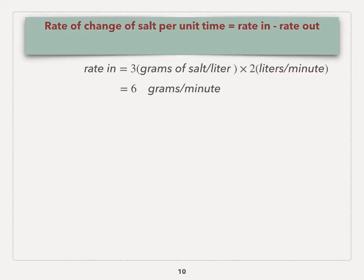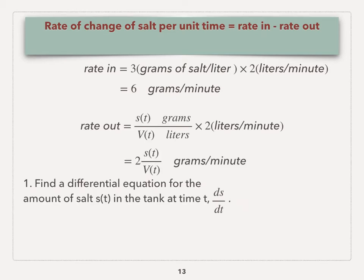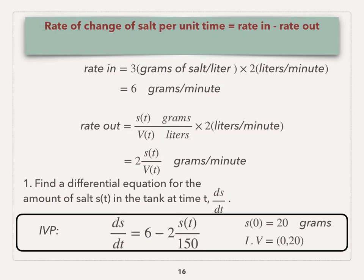Let's summarize all that we have learned. We have rate in, we have rate out, and we can finally find the differential equation for the amount of salt. ds/dt equals rate in minus rate out. And then we also have an initial value. When t equals 0, s(0) equals 20 grams. So this is an IVP problem.